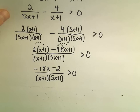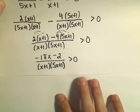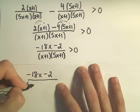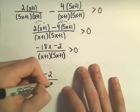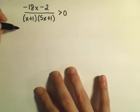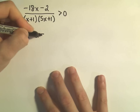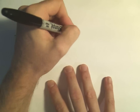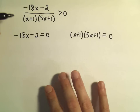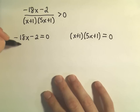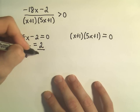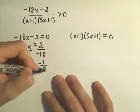Now that we have the left side as a single fraction, we take the numerator, set that equal to 0, and solve. And we take the denominator, set that equal to 0, and solve. So we have negative 18x minus 2 equals 0. If I solve this, I'll get negative 18x equals positive 2. Dividing both sides by negative 18, I get x equals negative 1 over 9. This is what makes the numerator 0.